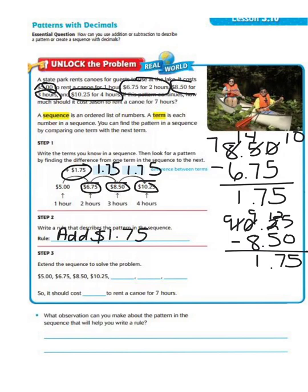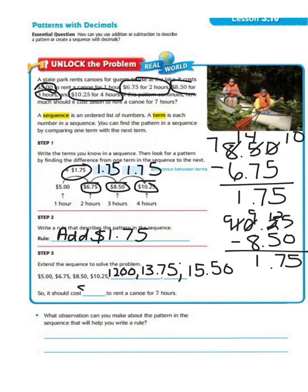Remember, we're not done with our word problem — it asks how much it should cost Jason to rent a canoe for seven hours. So we have to extend the sequence: $5, $6.75, $8.50, $10.25. Taking $10.25 and adding $1.75 gives us $12.00, then adding $1.75 gives us $13.75, and adding $1.75 one more time gives us $15.50. So it should cost $15.50 to rent a canoe for seven hours.